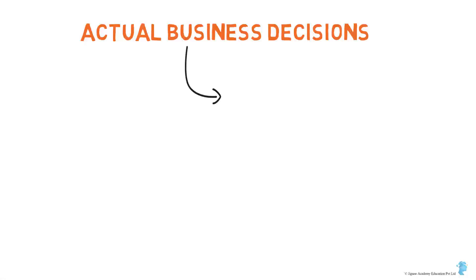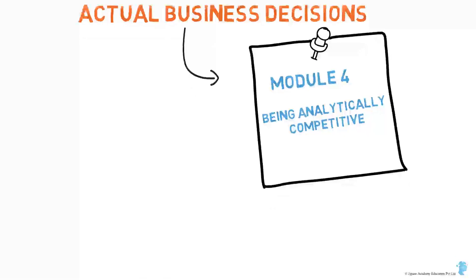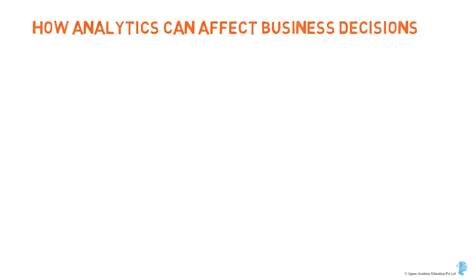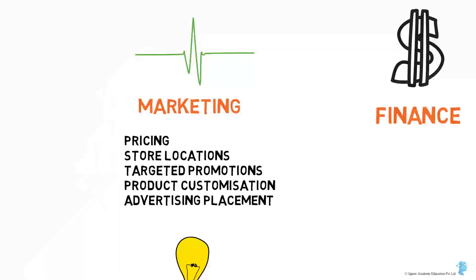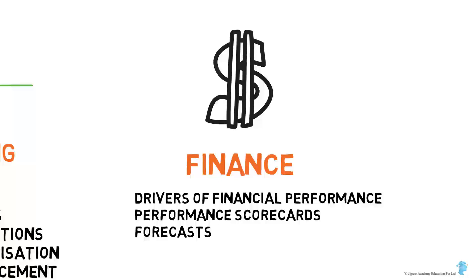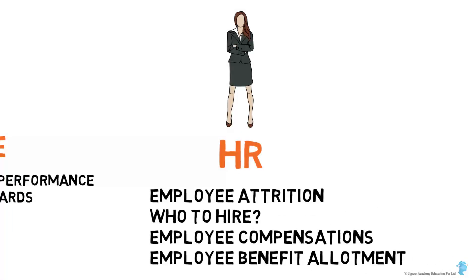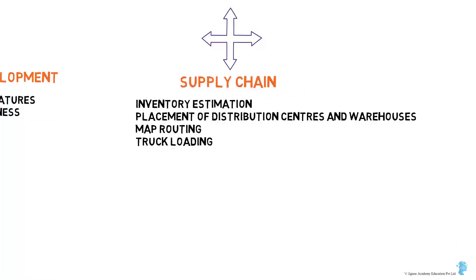Let's now look at a brief overview of how analytics can affect business decisions across functions in a company. In marketing: pricing, store locations, targeted promotions, product customization, advertising placement. In finance: drivers of financial performance, performance scorecards. In HR: employee attrition, who to hire, employee compensation, employee benefit allotment. In research and development: desired product features, product effectiveness, product design. In supply chain: inventory estimation, placement of distribution centers and warehouses, map routing, truck loading.